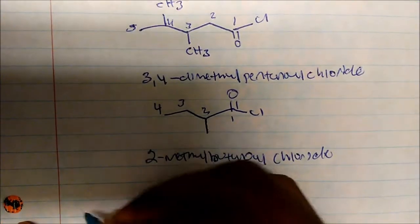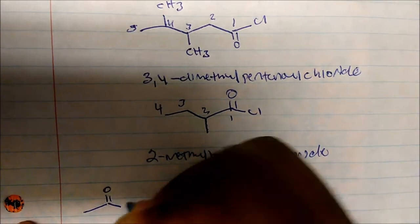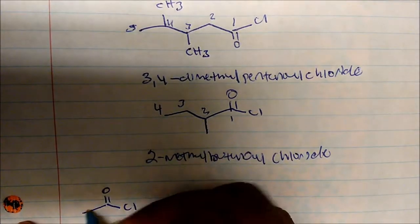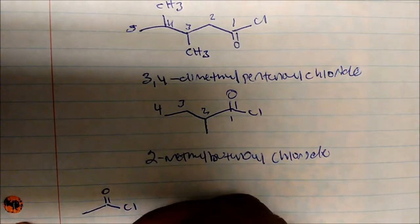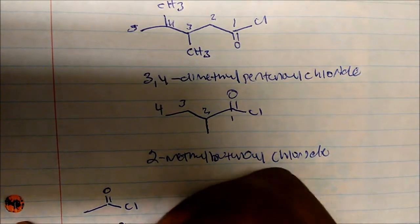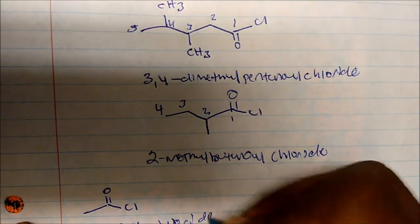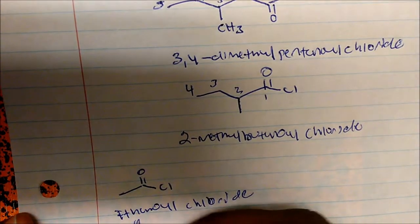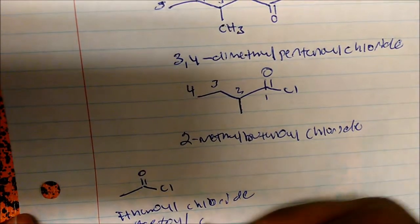Some more common acid chlorides you'll see is this one. Again, we have one, two, so this is ethane. So this is ethanoyl chloride. The common name for this is actually acetyl chloride.